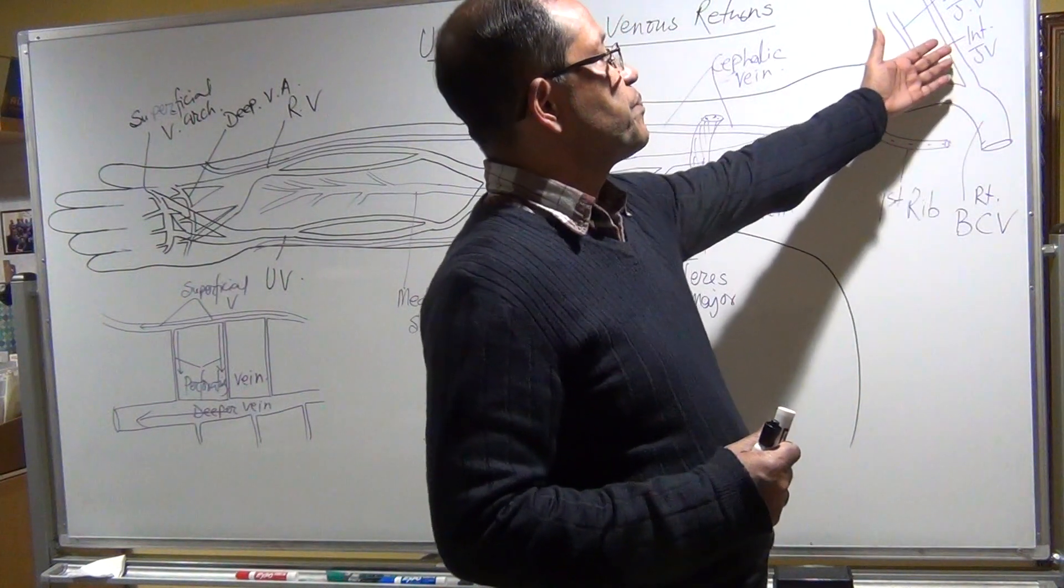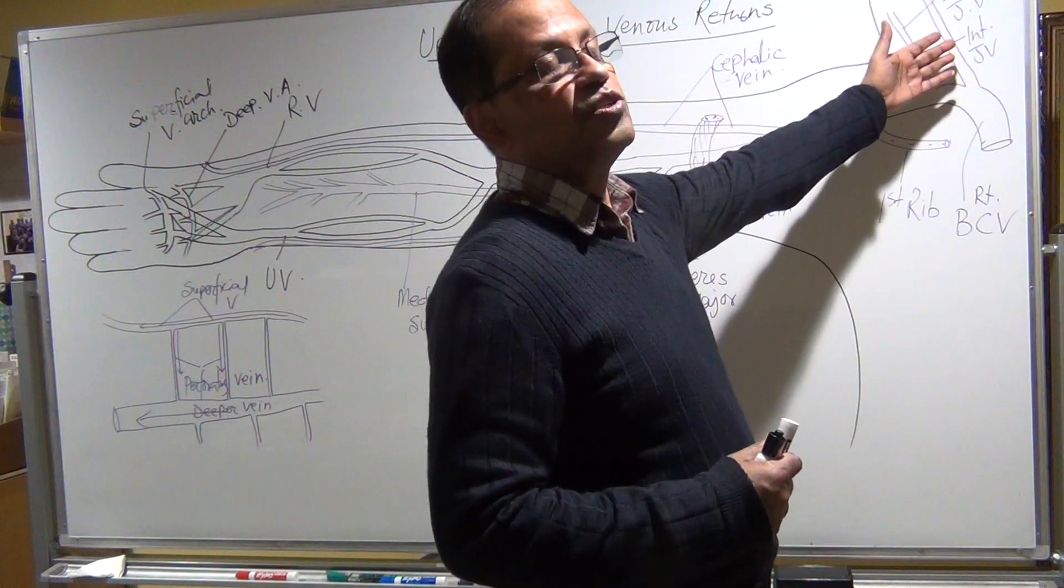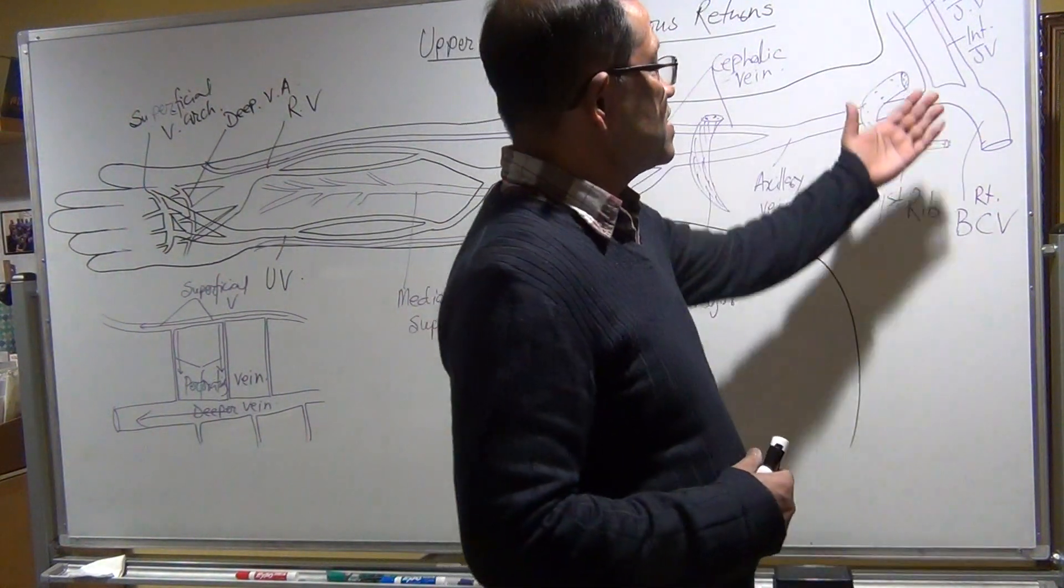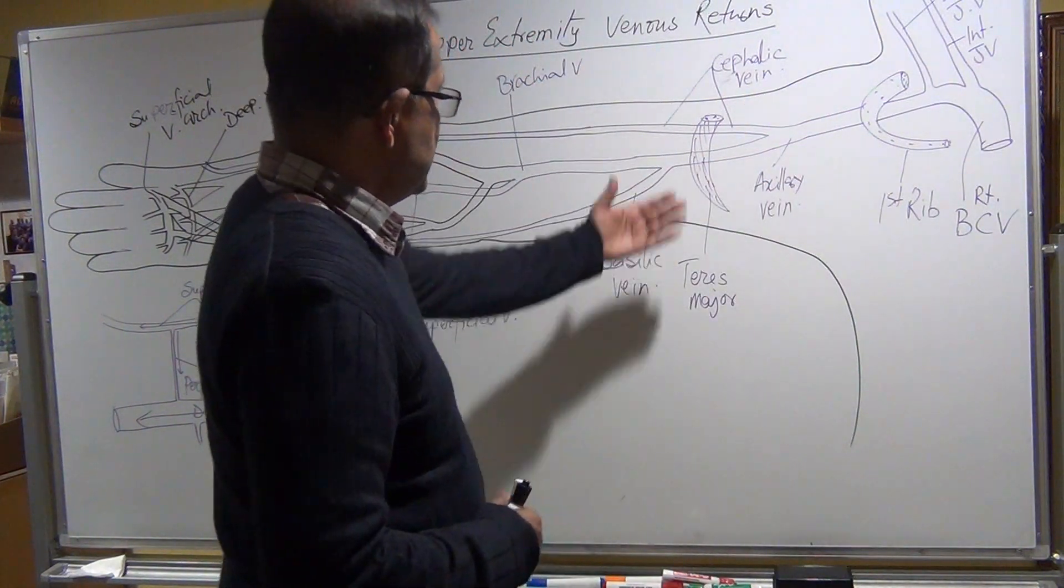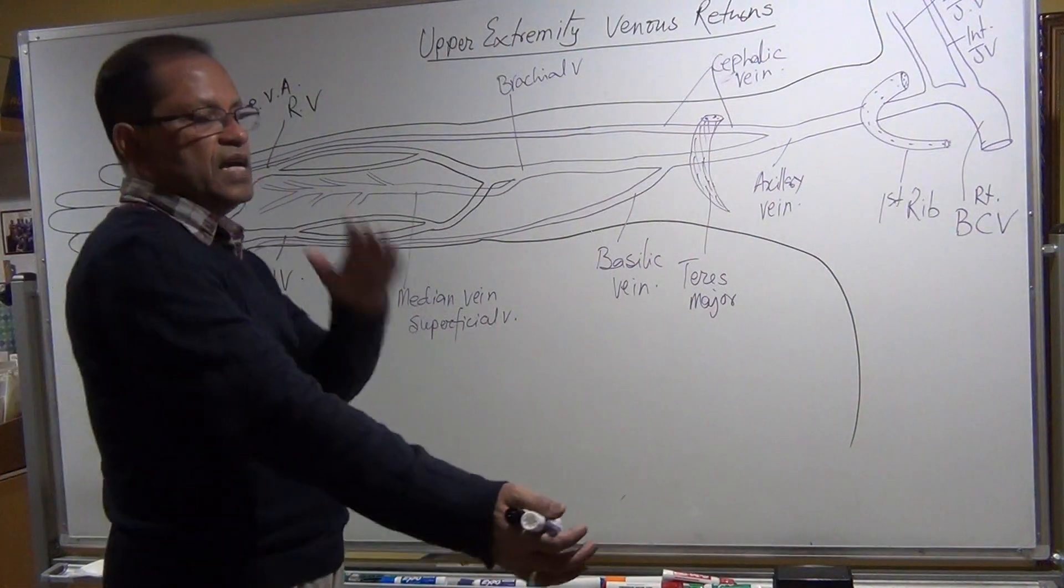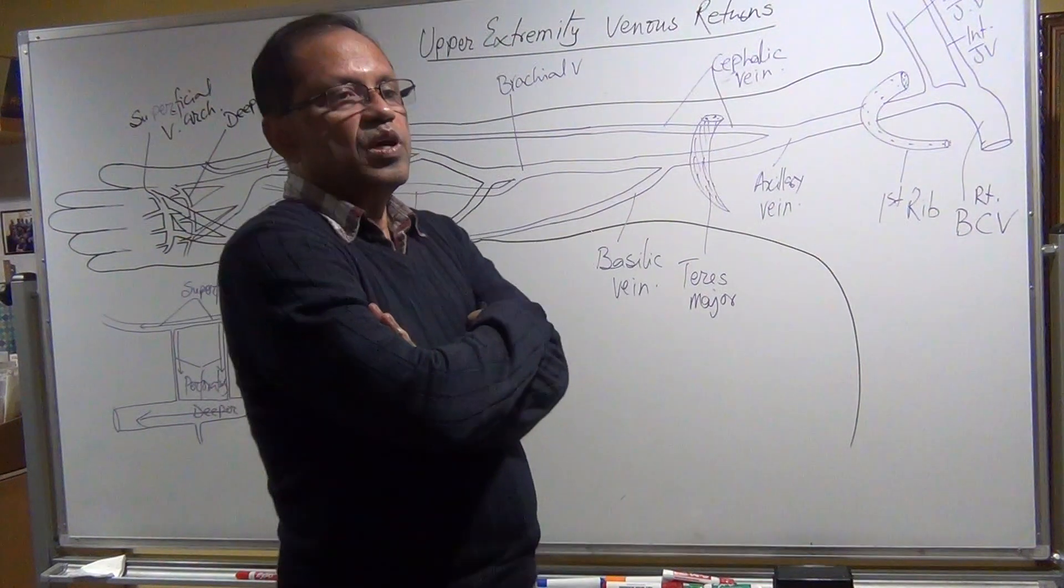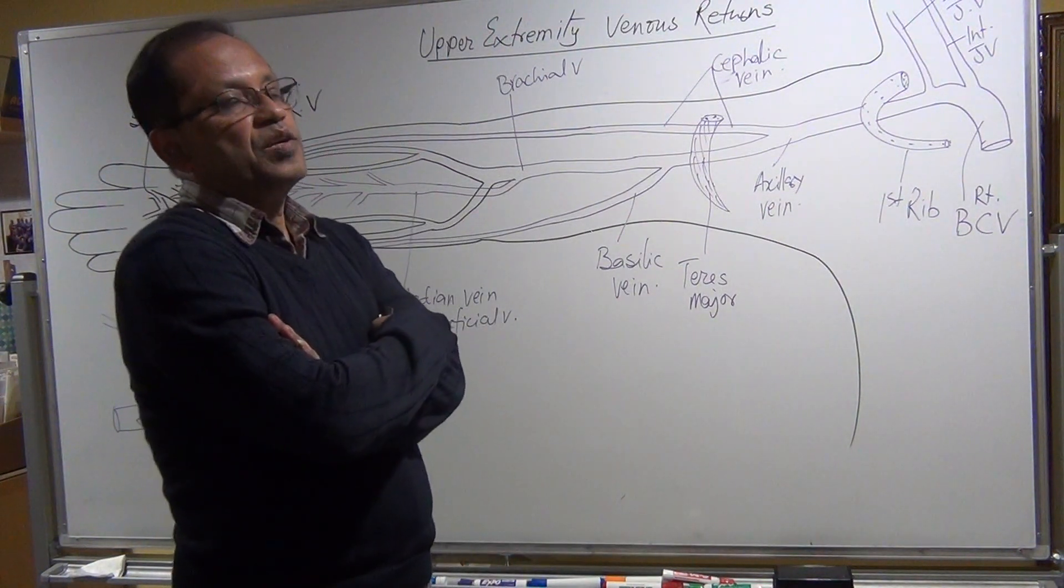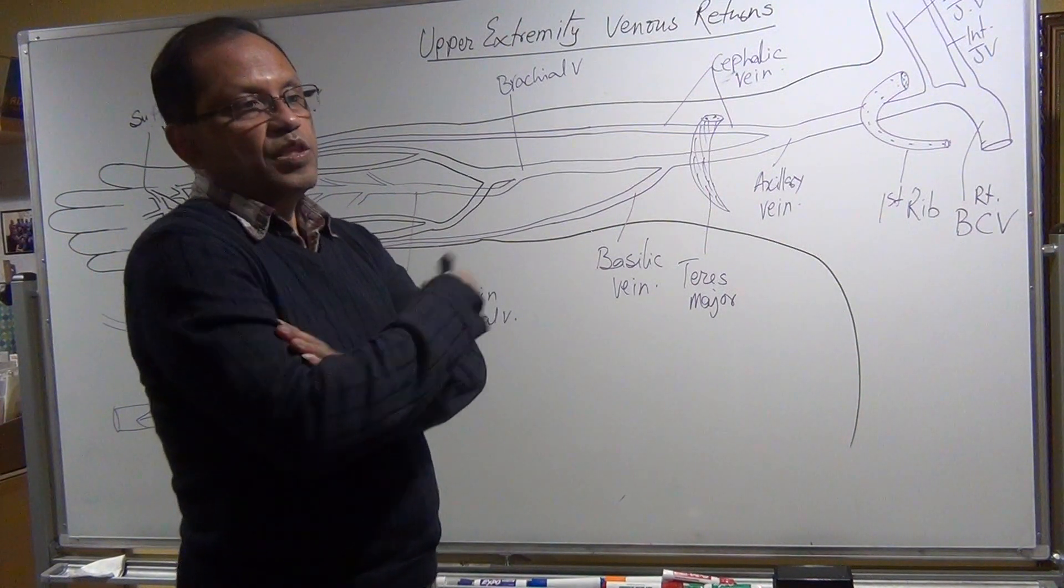there is congestion in the internal jugular vein, external jugular vein, subclavian vein, axillary vein, then brachial vein, and all veins in the upper arm and forearm. So the pressure gradient is reversed now.